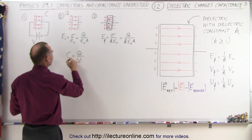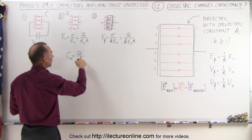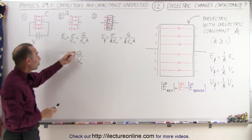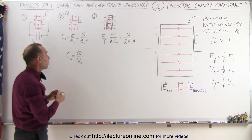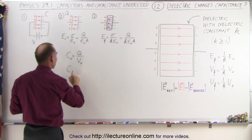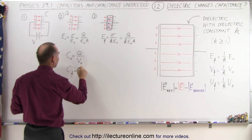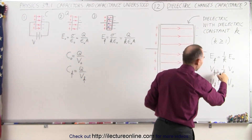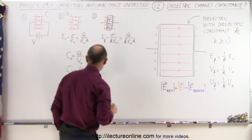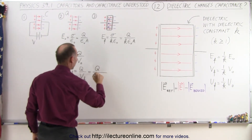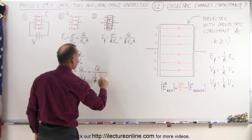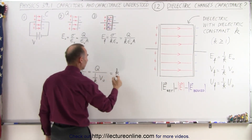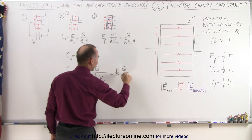We can say that the initial capacitance, before we put a dielectric in there, is equal to the charge divided by the initial voltage. Now if we add a dielectric, we have a new capacitance which is equal to q over the new voltage. From what we saw before, the new voltage is going to be 1 over k times the initial voltage. So this is equal to q divided by (1 over k times v initial), which can be written as k times q divided by v initial.